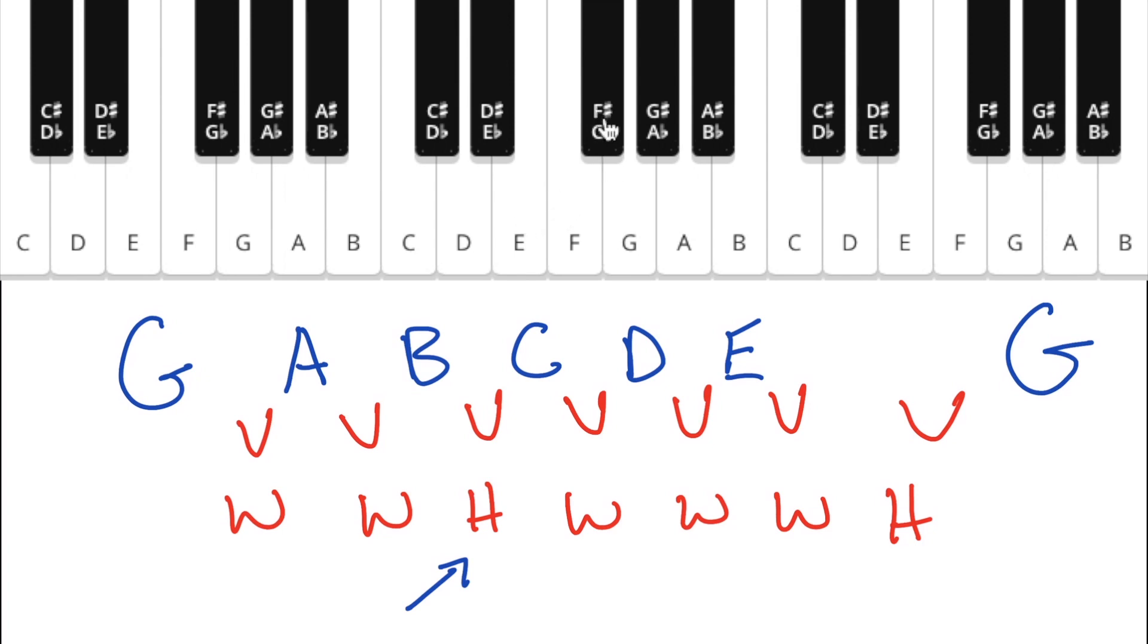Do we call this note F sharp, as in the note right above F? Or do we call this note G flat, as in the note right below G? When we've got two spellings for the same note, we call them enharmonic. And we're about to look at the reason why we might name a note one of two different names.